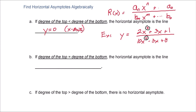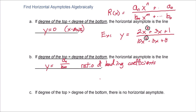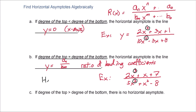For rule b, if the degree of the top is equal to the degree of the bottom, then the horizontal asymptote is the line y equals a sub n divided by b sub m — a ratio of leading coefficients. For example, for 2x cubed plus x plus 7 divided by 5x cubed plus x squared minus 8, the degrees are the same, so the horizontal asymptote is y equals 2 over 5, or y equals 2 fifths.